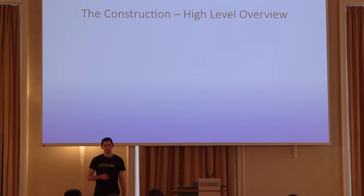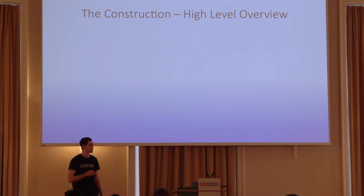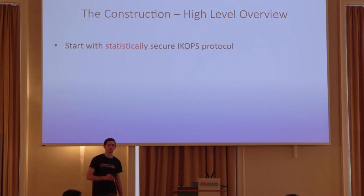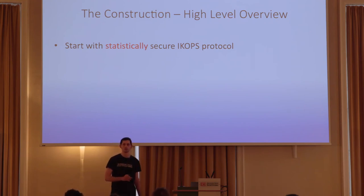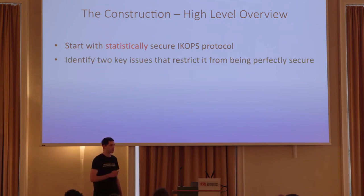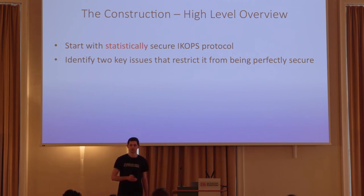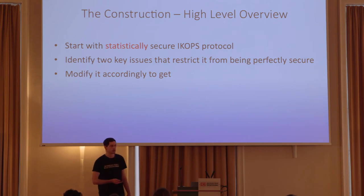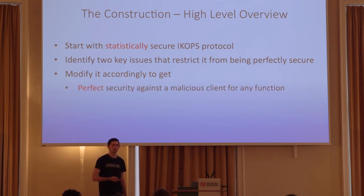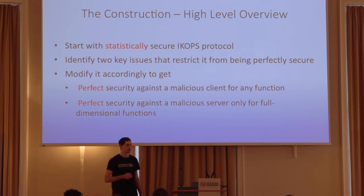What is our construction? I'll start with a high-level overview. First, we start with the statistically secure ICOPS protocol — a single-round protocol that achieves statistical security. We identify two key issues in that protocol that prevent it from achieving perfect security. We modify the protocol accordingly, and the resulting protocol achieves perfect security against the malicious client for any functionality, even if it's not full-dimensional. The full-dimensional condition comes into play when we consider malicious servers.